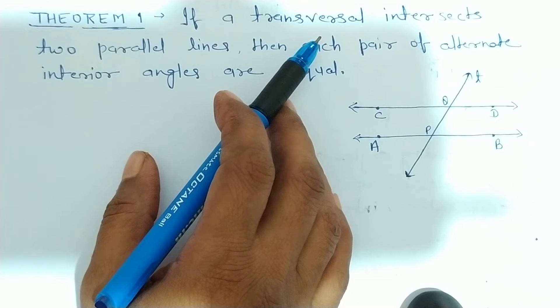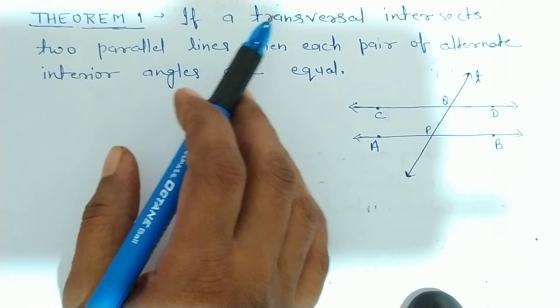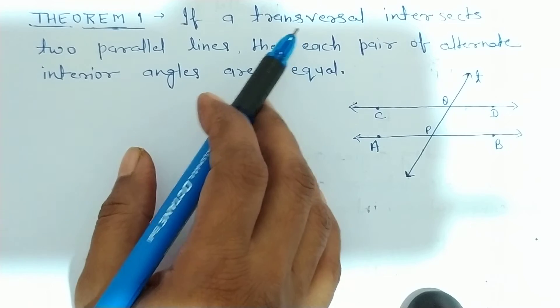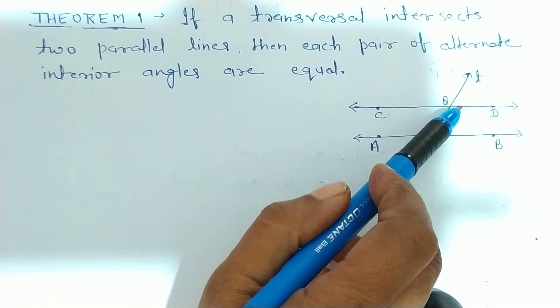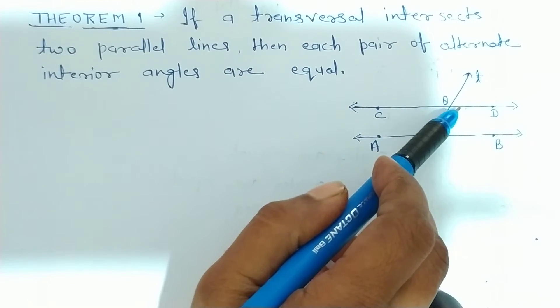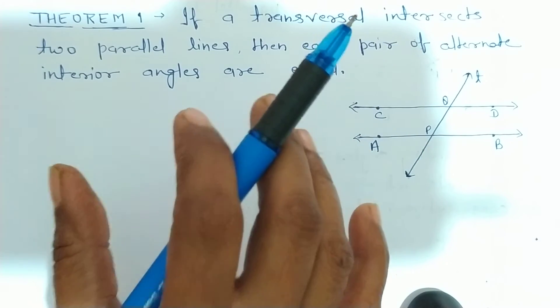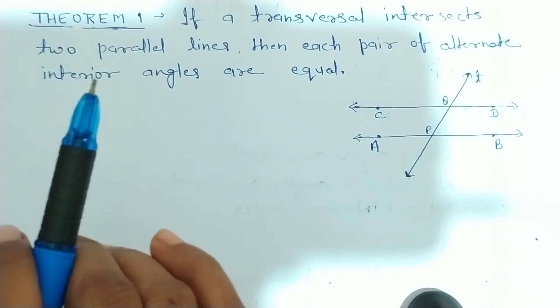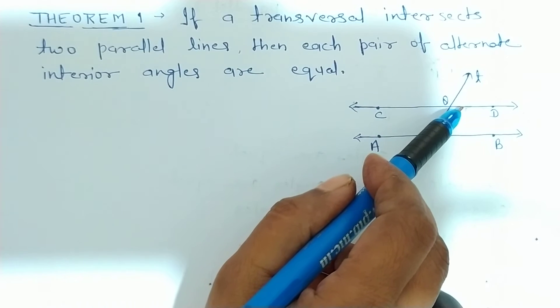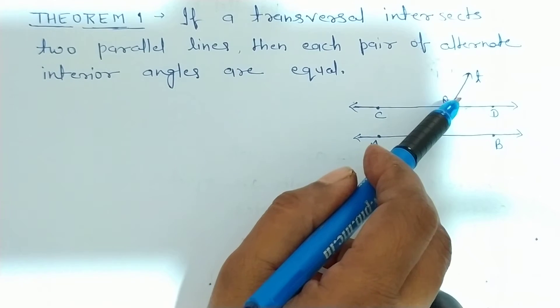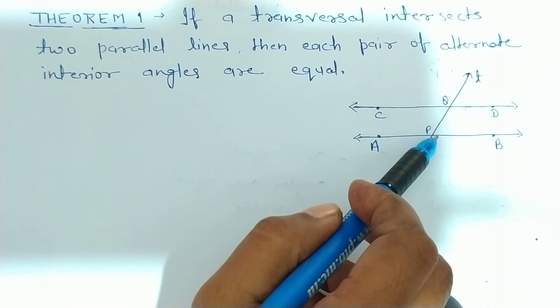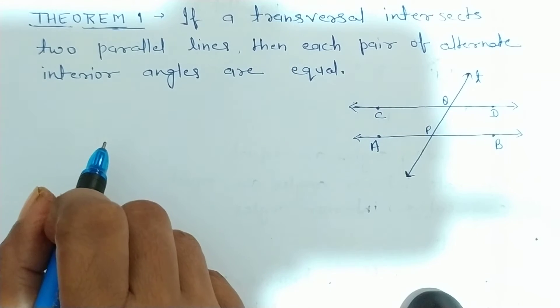In my previous video, you have better understood what is transversal and how many angles are formed when a transversal intersects two parallel lines or two lines. Simple lines clear, so jitne bhi angles bante hain, is intersecting point pe, usay hum ne teen group mein classify kiya tha.